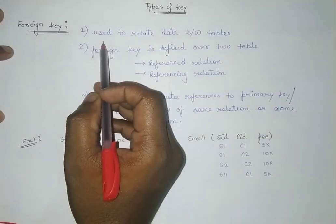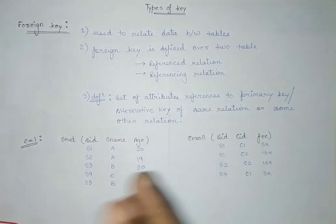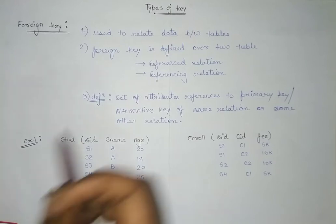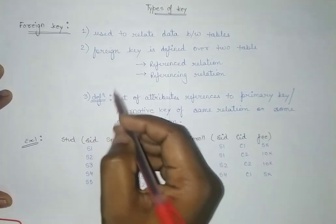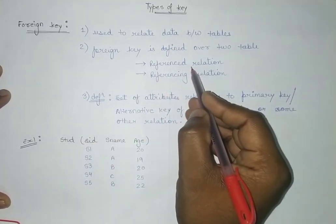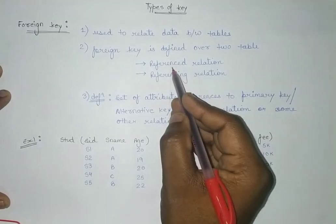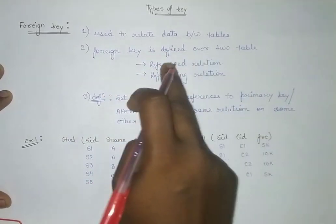The first thing we need to understand is that the foreign key is used to relate data between tables. If there are two tables, the relation between these two tables will be made through the foreign key. The two different tables involved will be known as the referenced relation and the referencing relation — that is, the reference table or referencing table.